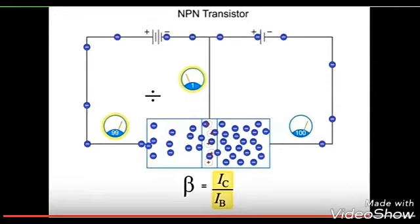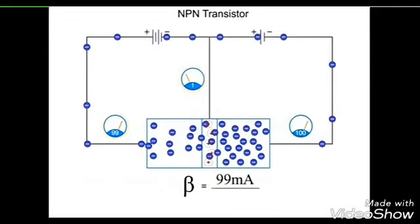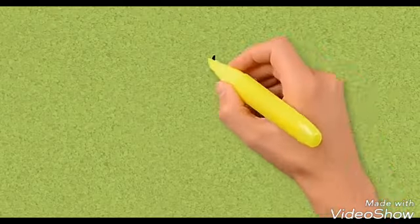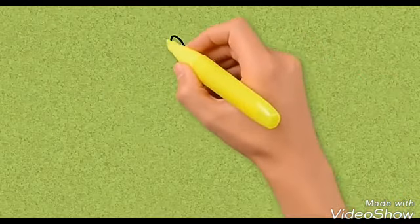In this example, beta would be equal to 99 milliamps, the current at the collector, divided by 1 milliamp, the current at the base, giving a beta of 99.